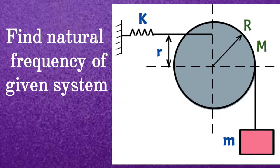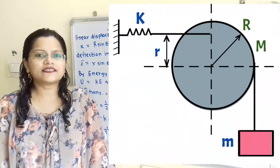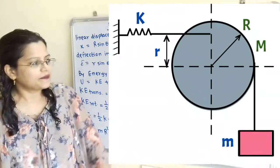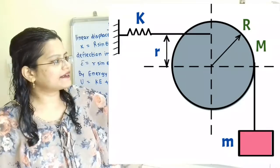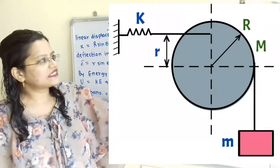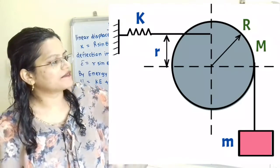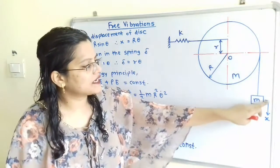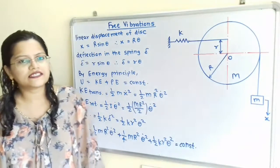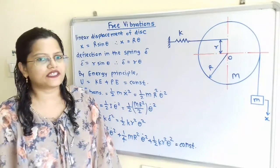Find the natural frequency of the given system. Mass small m is connected to a disk of mass capital M and radius capital R. A spring with stiffness K is also connected to the disk at a distance small r from the center. When mass m is displaced in the downward direction through a distance x, we have to find out the equation of motion for this system.